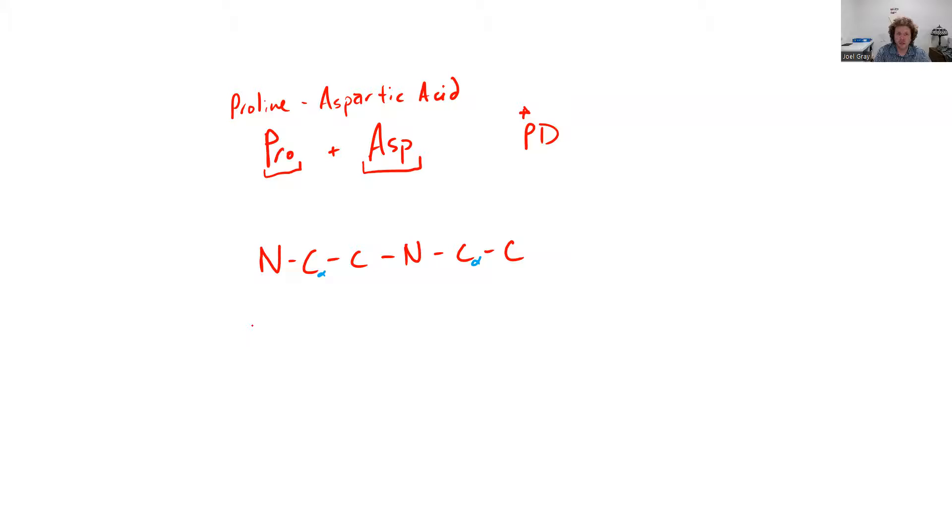Our C-terminal amino acid is aspartic acid. Proline has a unique R group in that it goes CH2, CH2, CH2, and then back to my N-terminus. So there's my R group for proline.